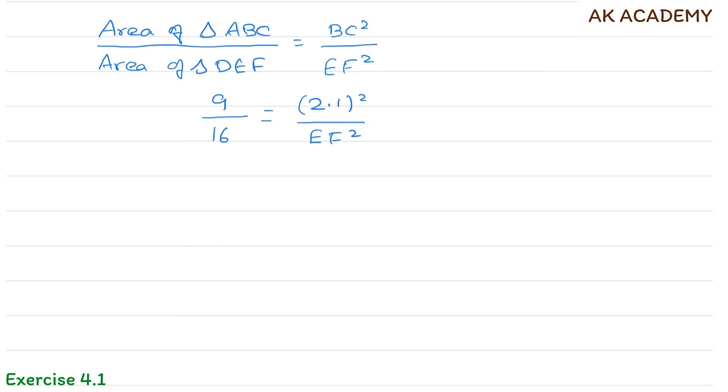Taking square root on both sides, the squares cancel, so we get 3/4 equals 2.1/EF.